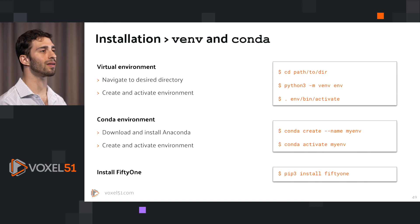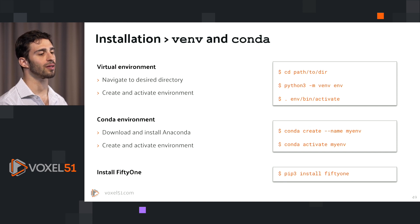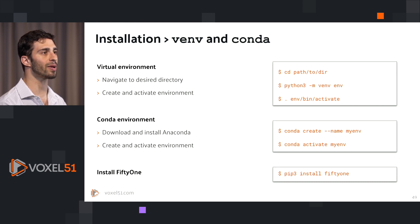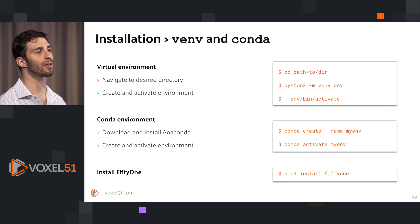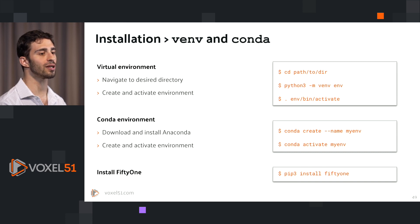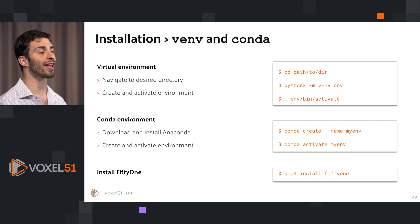We're going to walk you briefly through the process of getting set up with FiftyOne in a virtual environment. The first thing you need to do is change into the directory where you want to install the virtual environment using the `cd` command in your terminal. After that, you can run `python` or `python3` depending on your machine, then `-m venv`, the name of the environment, followed by a dot for the current directory. Then run `env/bin/activate`.